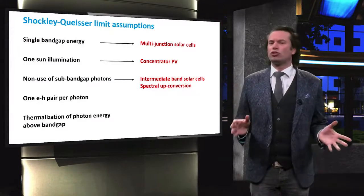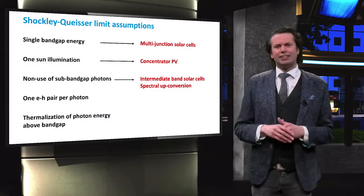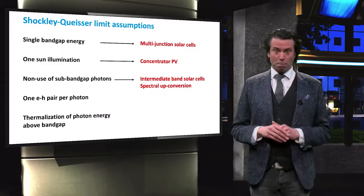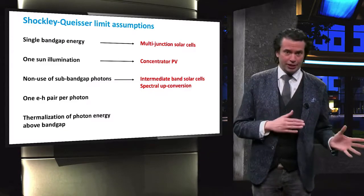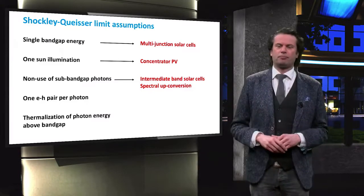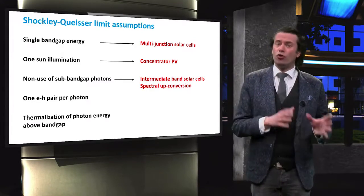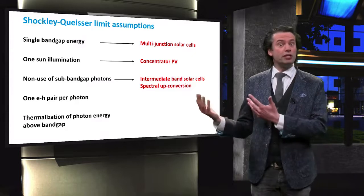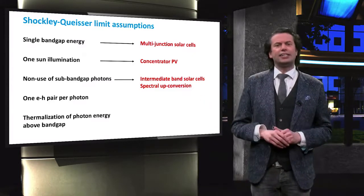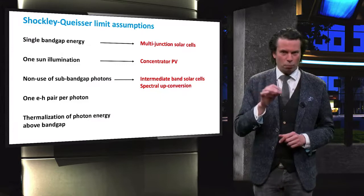We discussed how intermediate band solar cells and spectral upconversion tackle the assumption that sub-band gap photons cannot lead to charge carrier generation. The next assumption of the Shockley-Queisser limit is that photons with an energy much greater than the band gap energy can only excite a single electron-hole pair.